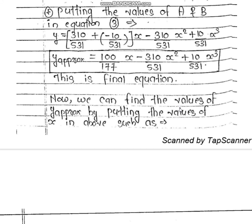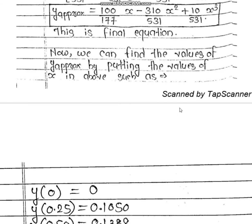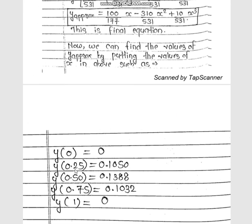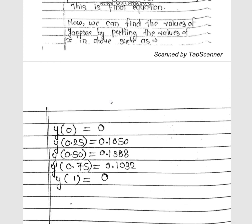We can find the values of y_approximate by substituting values of x into the final equation. The results are: y(0) = 0, y(0.25) ≈ 0.1050, y(0.50) ≈ 0.1388, y(0.75) ≈ 0.1032, and y(1) = 0.